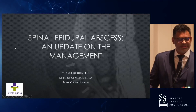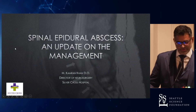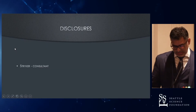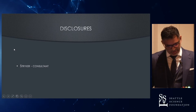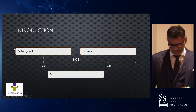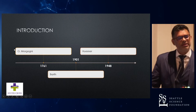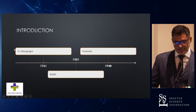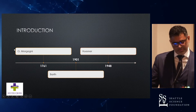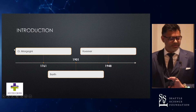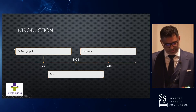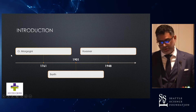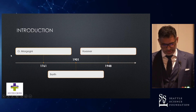I wanted to spend a few moments this morning to discuss the updates on the management of spinal epidural abscesses. To disclose, I am a consultant for Stryker, but that has no bearing on this talk. Historically, the diagnosis of spinal epidural abscesses was initially made over 250-plus years ago by Morgagni in a post-mortem autopsy, with subsequent surgery of a thoracic decompression by Barth in 1901, followed by a seminal article by Huesner in 1948.